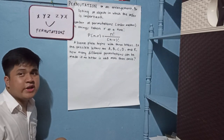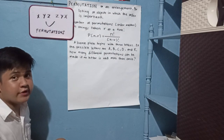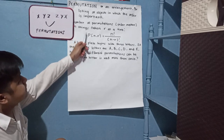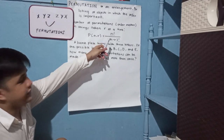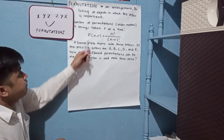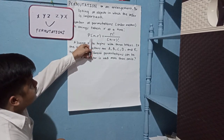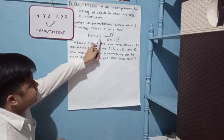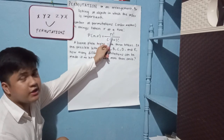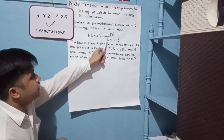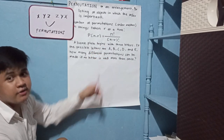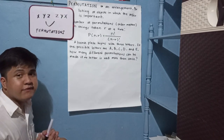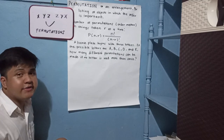Now let us proceed to the formula of permutation. The number of permutations of N taking R at a time is: P(N, R) equals N factorial over N minus R factorial. Basically, we use this formula if there is no repetition in the given problem.